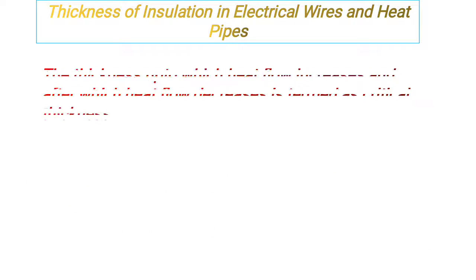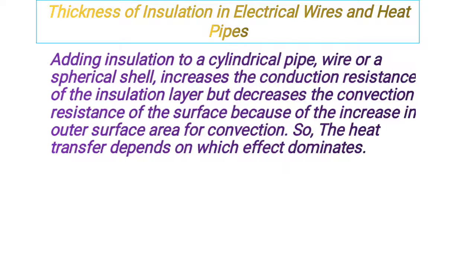Let's see the mechanism of heat transfer. Adding insulation to a cylindrical pipe, wire, or a spherical cell increases the conduction resistance of the insulation layer but decreases the convection resistance of the surface because of the increase in outer surface area for convection. So the heat transfer depends on which effect dominates, i.e., conduction or convection. These two are the two modes of heat transfer.